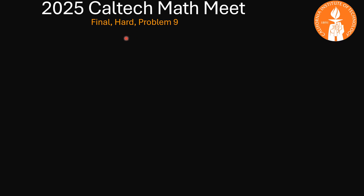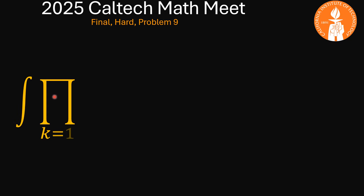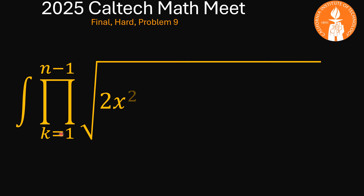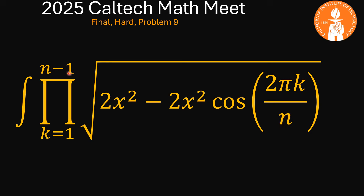Today we are looking at the 2025 Caltech math meet. We're looking at the final problems, the hard section. Our focus will be on problem number 9, which is an indefinite integral of the product from k equals 1 to k equals n minus 1 of the square root of 2x squared minus 2x squared cosine of 2πk over n. This is an interesting problem, so let's see how we may be able to solve it.